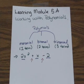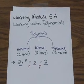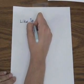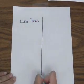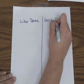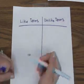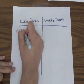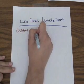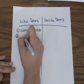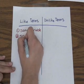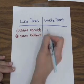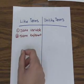When working with polynomials, you need to be able to tell if terms are alike or not alike. In order for terms to be alike, they must have two things: one, they must have the same exact variable, and that variable must also have the same exact exponent. That's how you can tell if terms are alike or not.